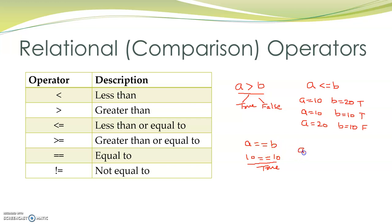Similarly, I can check for two things to be not equal. If I take the same case where a is equal to 10 and b is equal to 10, then this will become 10 not equal to 10. And this statement is false, so this expression will return a value false.